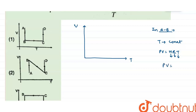In A to B, pressure is decreasing. When P is decreasing, that simply means V is increasing, because PV equals constant — pressure is inversely proportional to volume. So for A to B, volume is increasing. The graph goes from A to B with temperature constant and volume increasing, so volume at B is greater than at A.